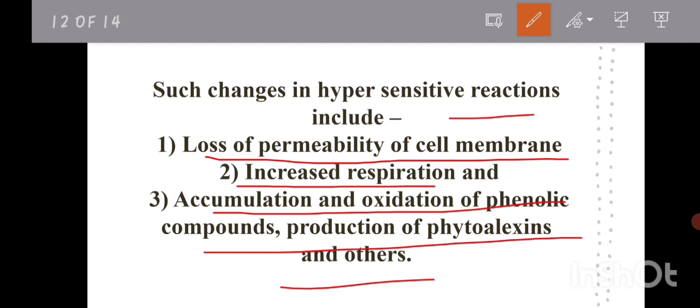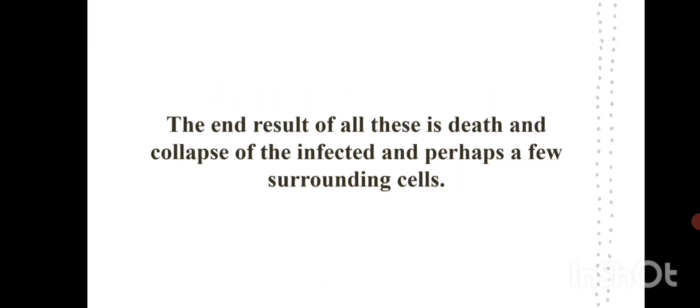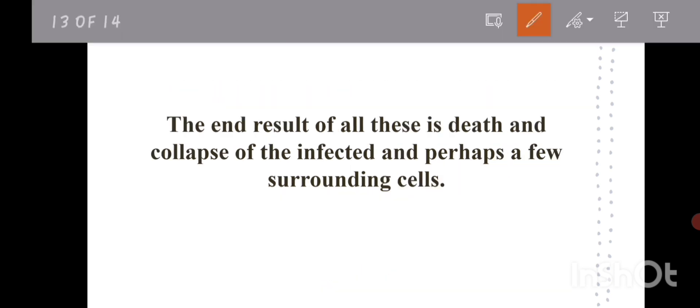Production of phytoalexins also occurs. Phytoalexins are in general not produced in plants but are produced after infection by fungi or other pathogens. These are chemical substances synthesized after infection. The end result of all these is death and collapse of the infected and perhaps a few surrounding cells. The dead tissues form at the site of infection, and adjacent normal cells are also affected and die.